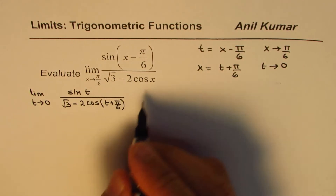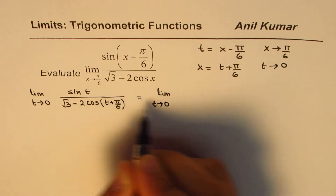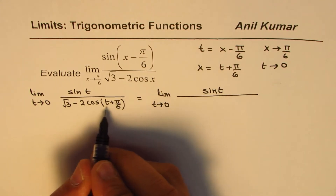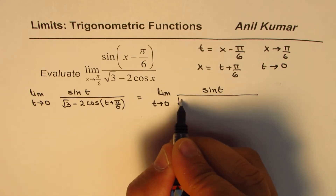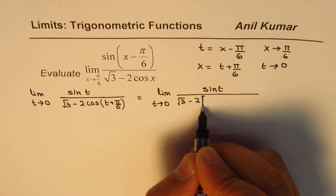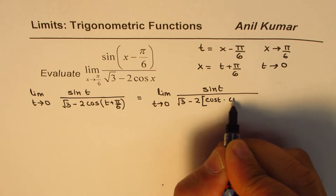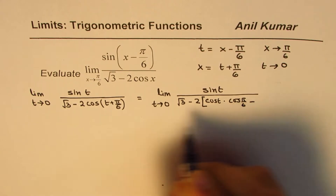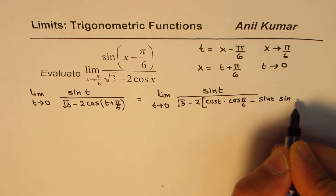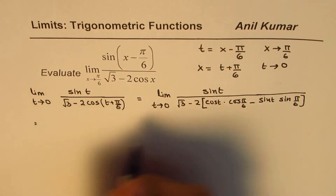We can expand this denominator using the formula cos(a + b). So we get: limit t→0 of sin(t) over √3 − 2·[cos t · cos(π/6) − sin t · sin(π/6)].